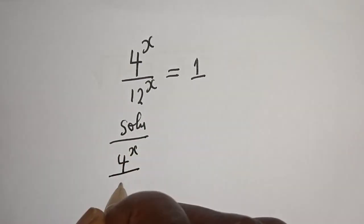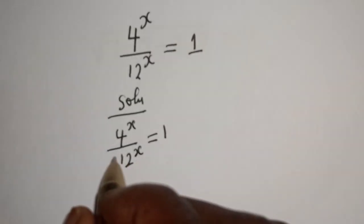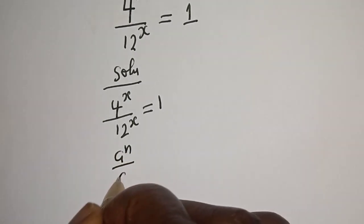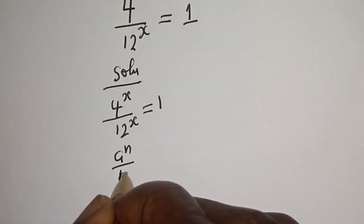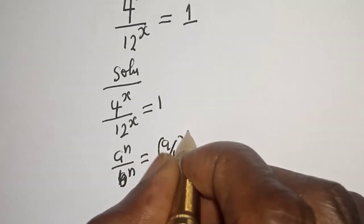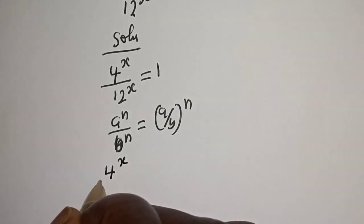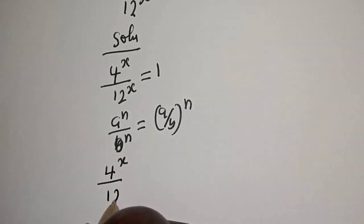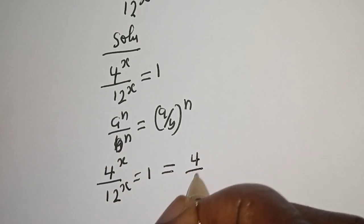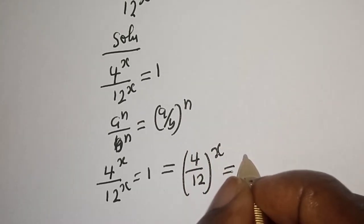4 raised to power s divided by 12 raised to power s is equal to 1. Remember this exponential rule: a raised to power n divided by b raised to power n is equal to a over b raised to power n. So, 4 raised to power s over 12 raised to power s equals 4 over 12 raised to power s, which equals 1.